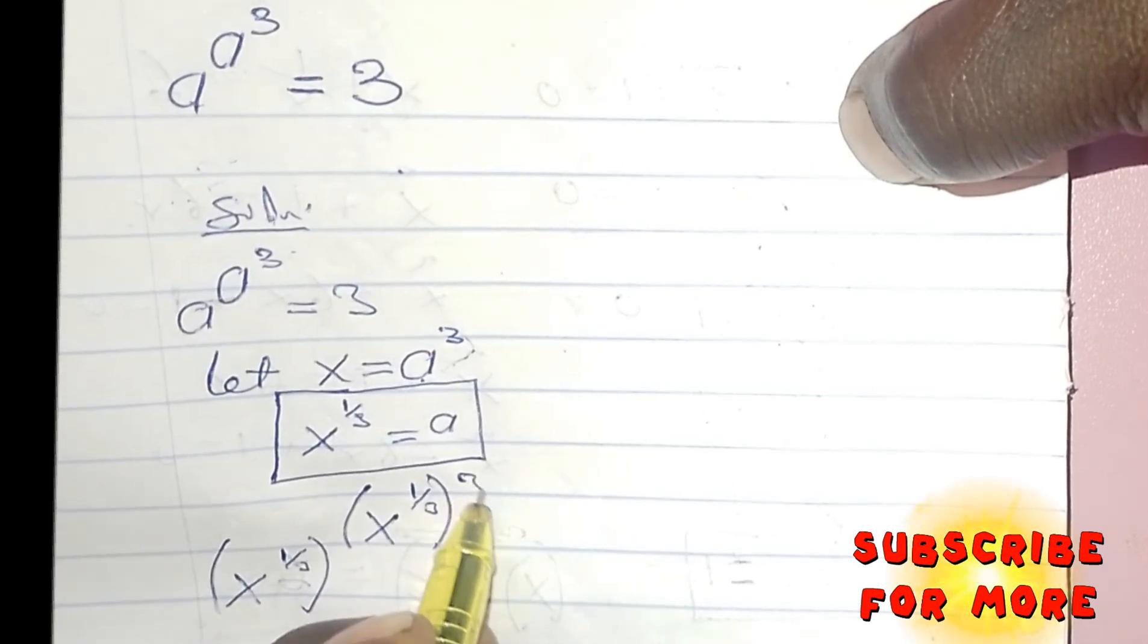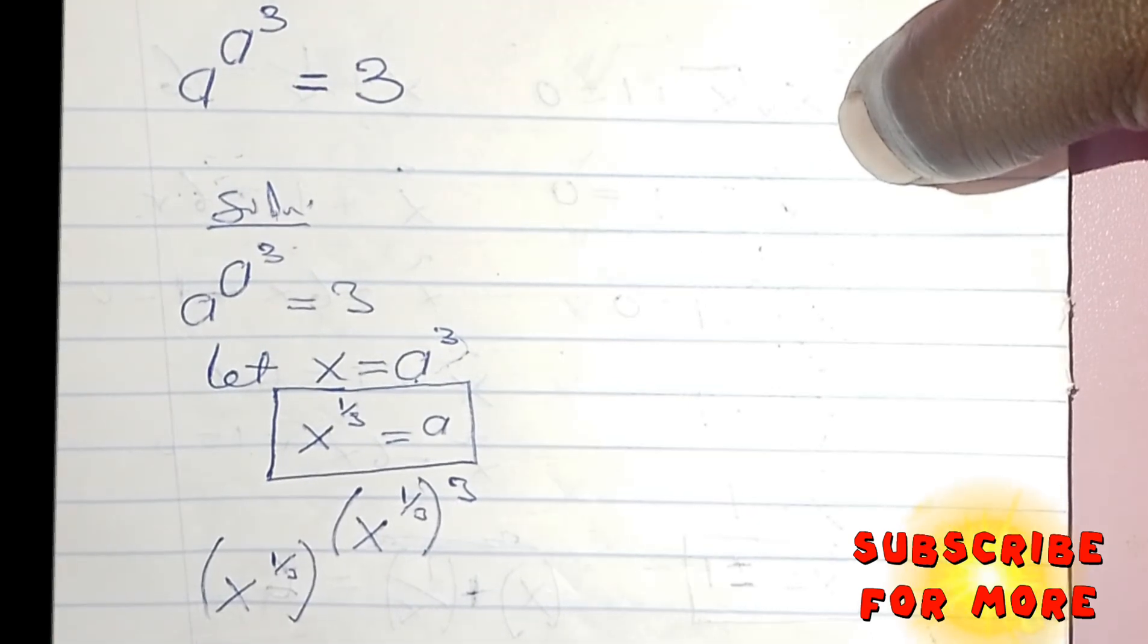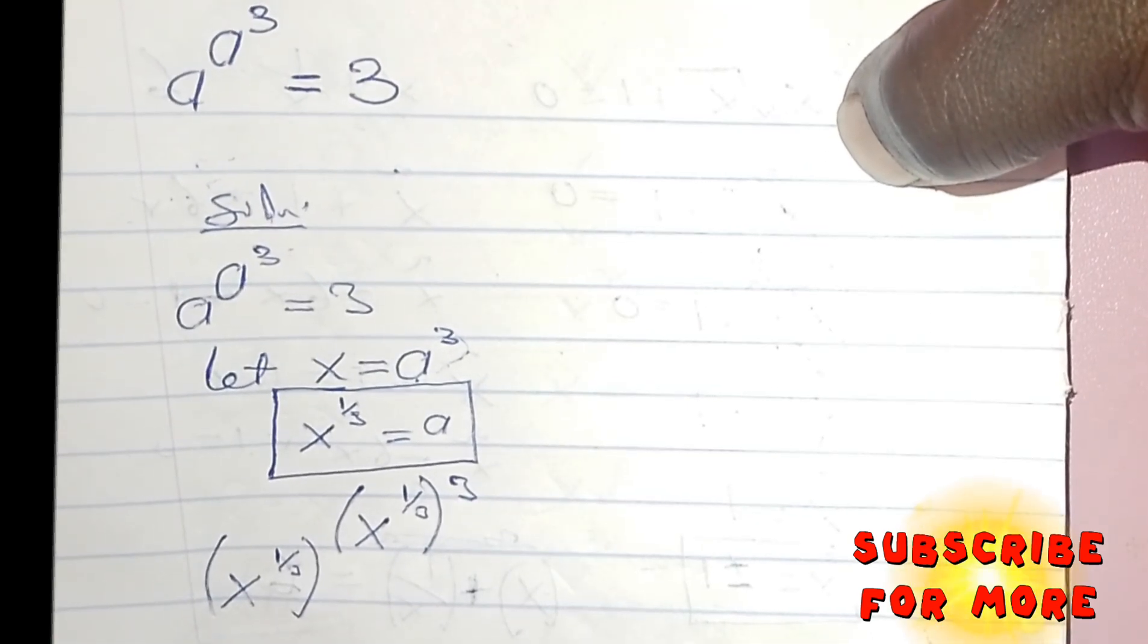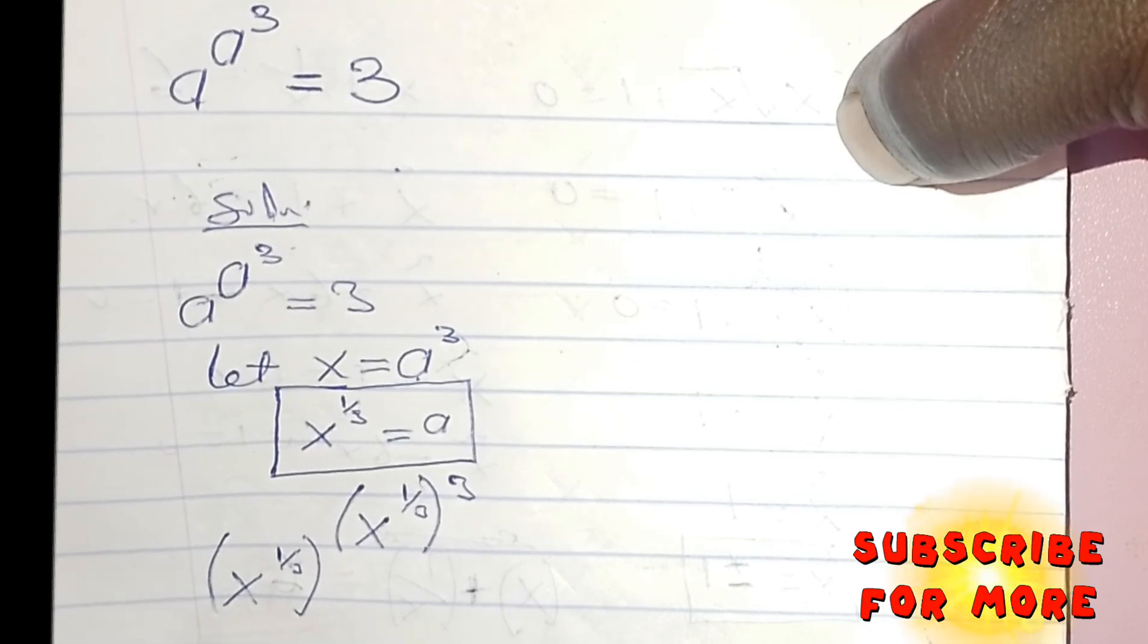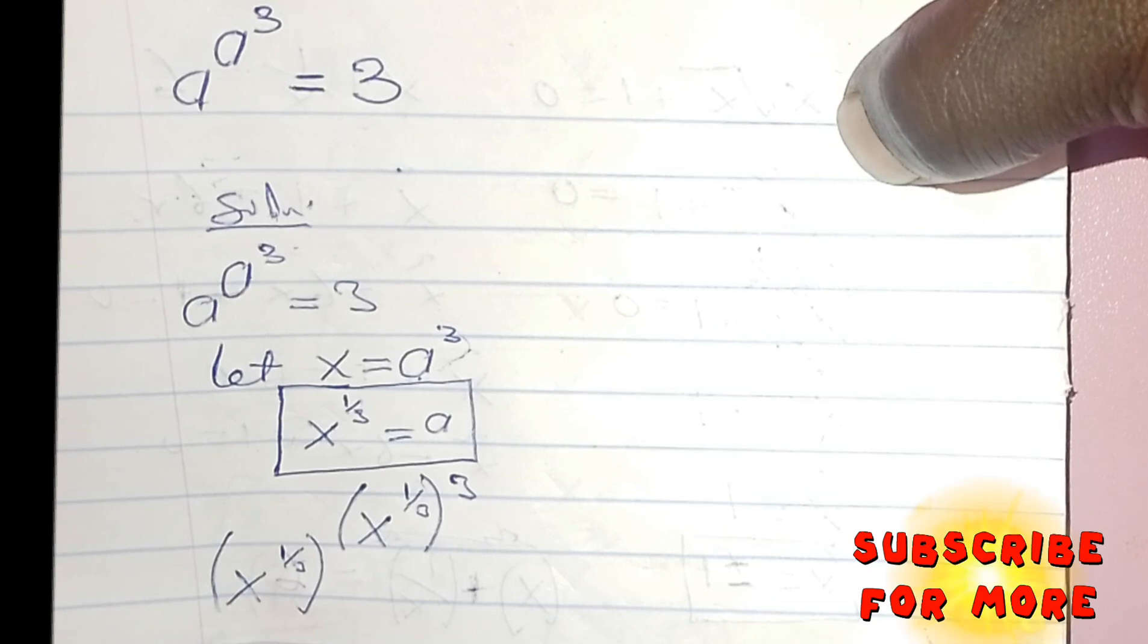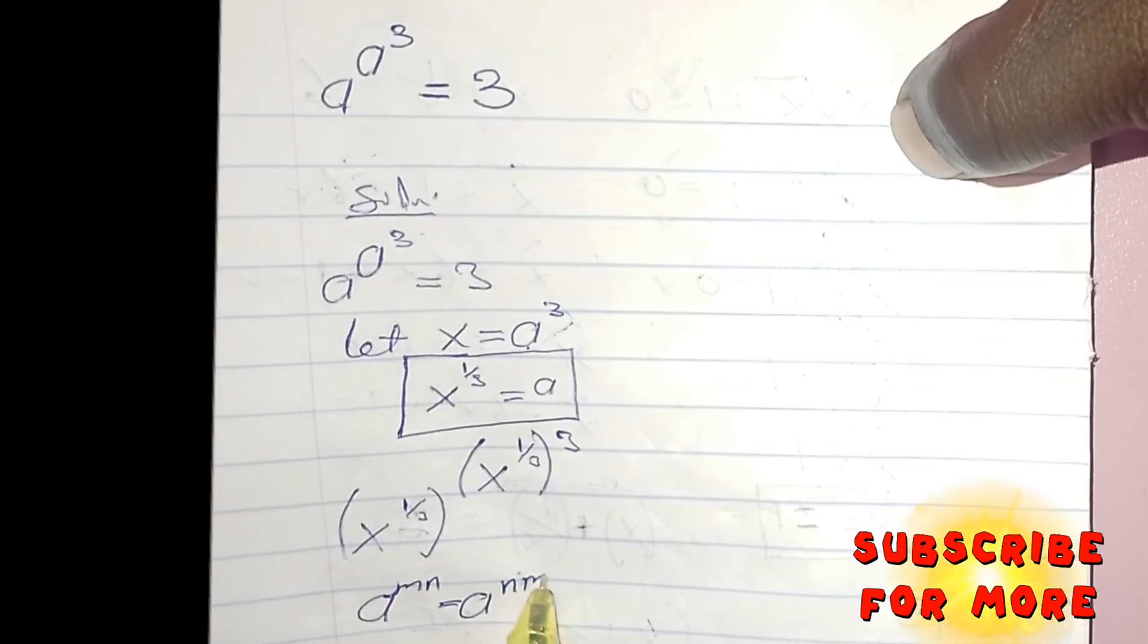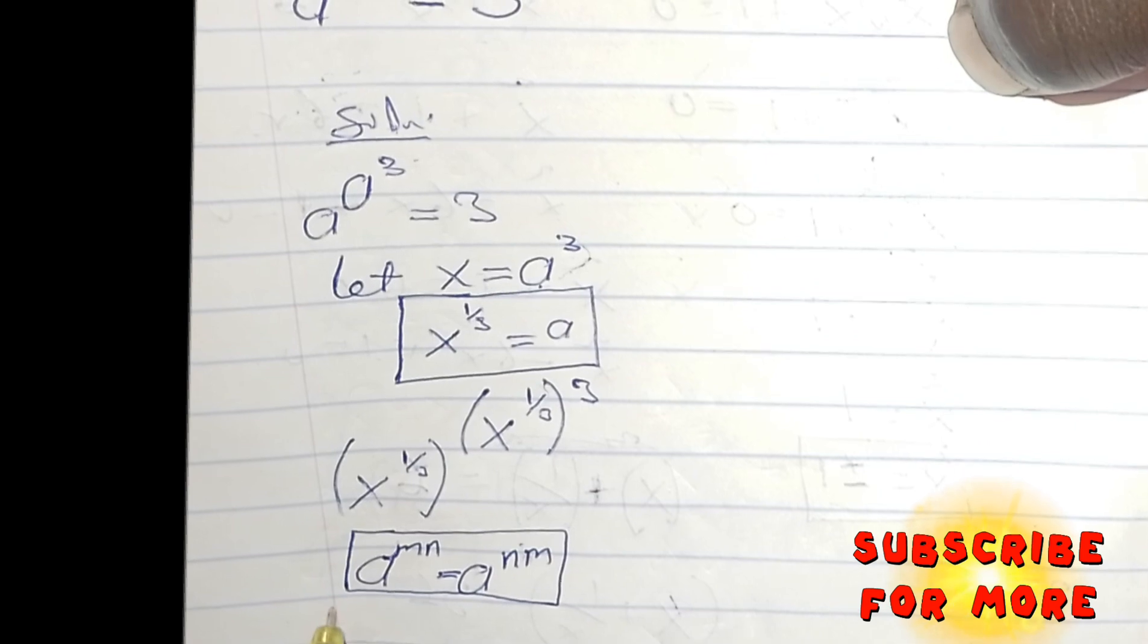But I know that based on the law of indices, whenever I have A, going by that, I can comfortably multiply this 1 over 3 by this.